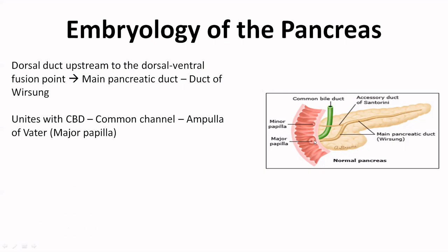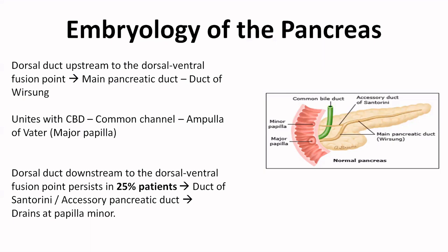It is this main pancreatic duct that will unite with the common bile duct at the ampulla of Vater or the major papilla. The dorsal duct downstream of the dorsal-ventral fusion point — the thin part — persists in only 25% of patients. This structure is present only in 25% of patients as the duct of Santorini, the accessory pancreatic duct, and it drains at the papilla minor. Minor papilla is proximal to major papilla, and usually this distance is 2 centimeters — a commonly asked question. Major papilla is the union of the common bile duct with the main pancreatic duct.